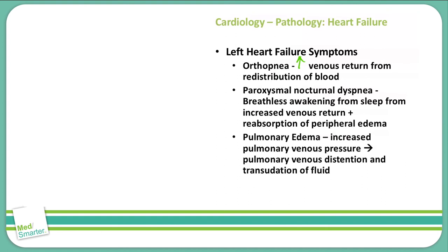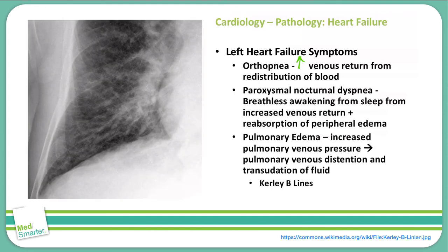You can see signs of pulmonary edema in a chest x-ray through what are known as curly B-lines — lines of edema that you can see stretching out in a chest x-ray, extending out towards the periphery.